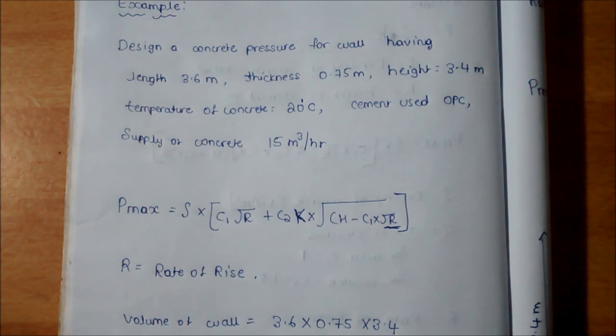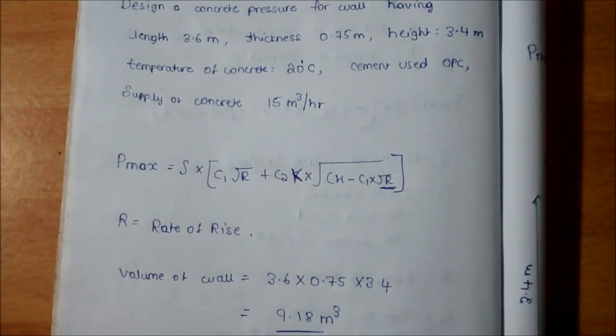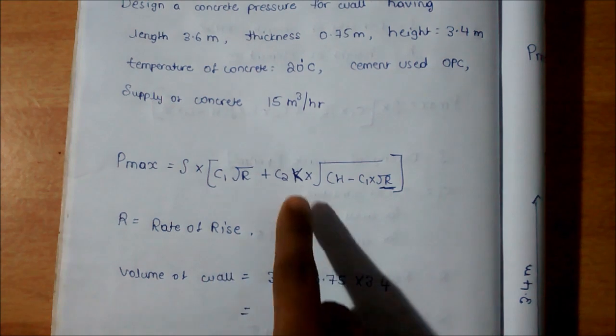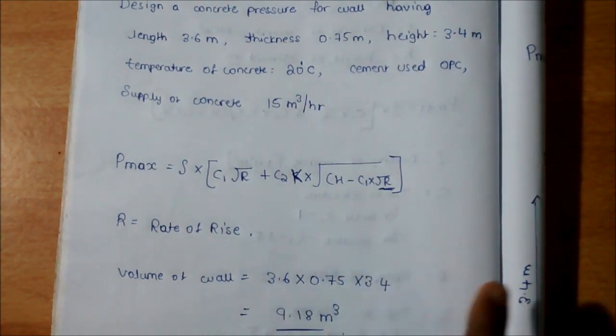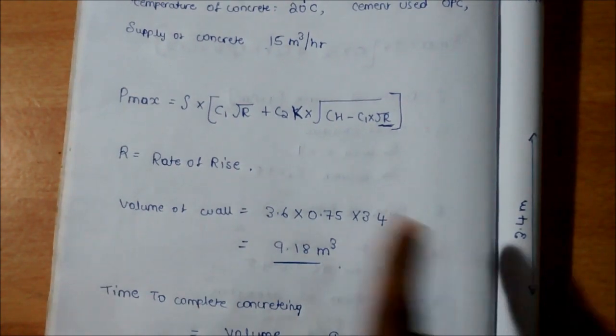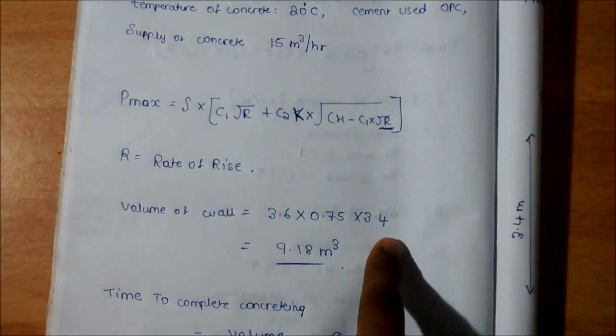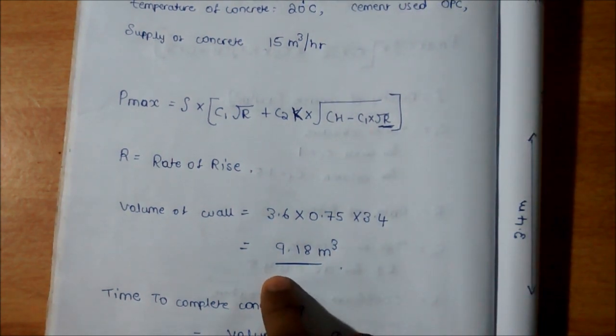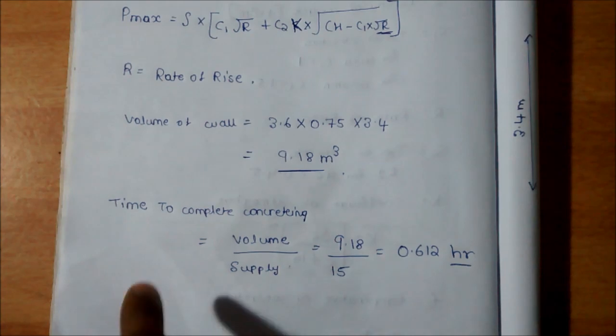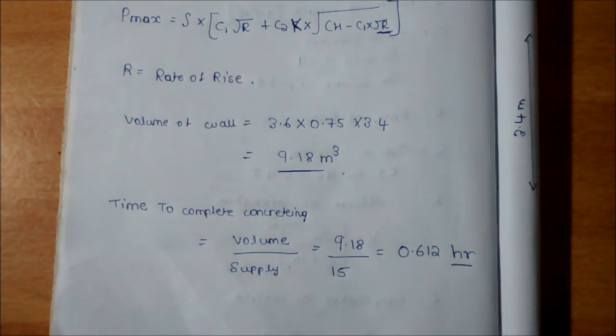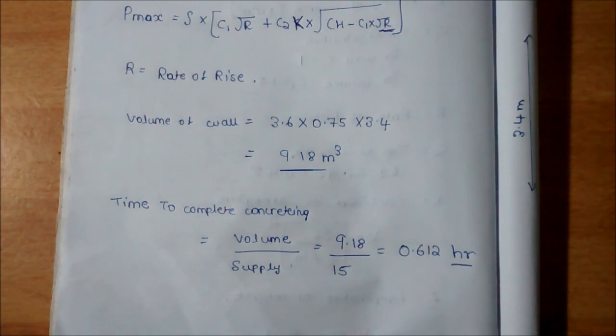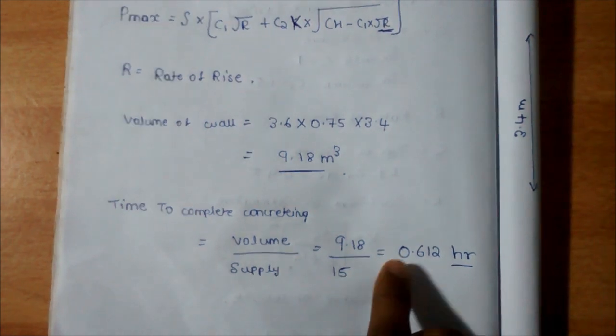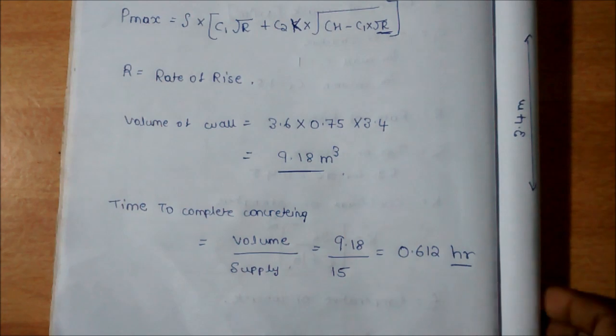First of all, we have to calculate P max. The unknown things are K and R. R is the rate of rise. To calculate rate of rise, first we calculate the volume of wall: length times thickness times height, so we get around 9.18 meter cube. Then we determine the time to complete concreting of the wall. We know the volume and the supply of concrete is 15 meter cube per hour, so we divide it and get 0.612 hours.